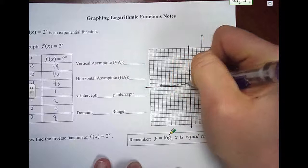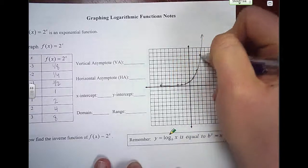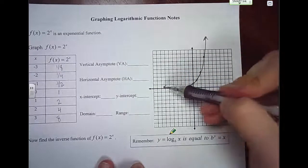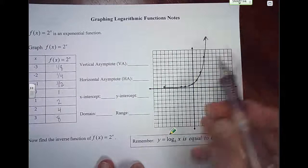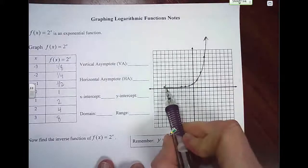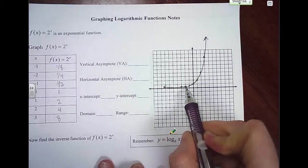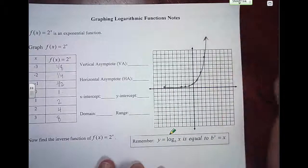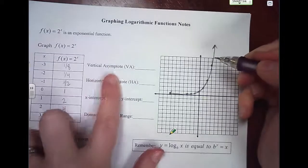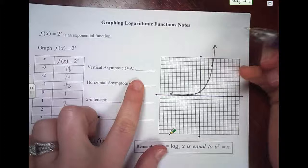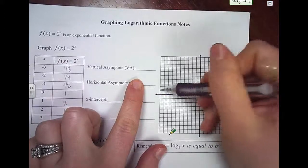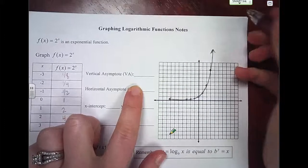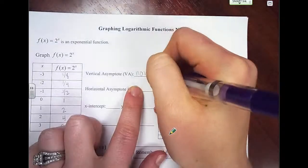What happens with this exponential graph? It's called exponential because it grows really, really quickly. It starts out kind of slow, growing, growing, growing, and all of a sudden it grows really, really fast. It has a vertical asymptote nowhere, because it's going to keep going to the left and to the right forever and ever. So there's no vertical asymptote.